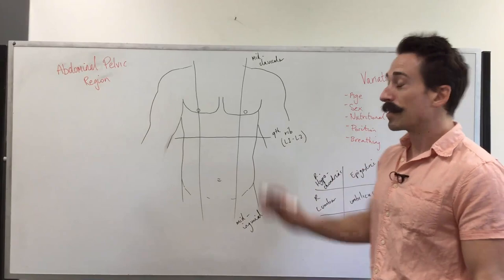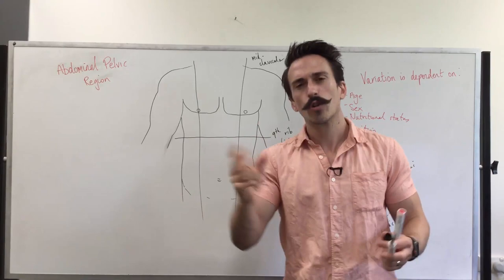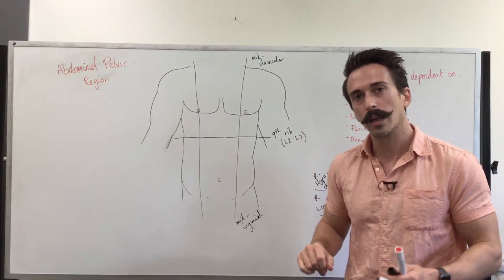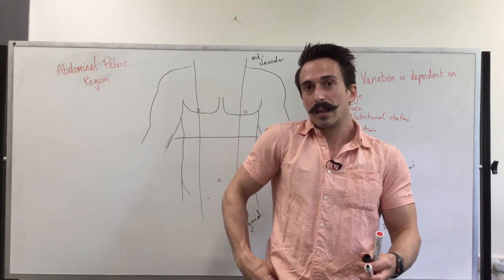Now the next line we're going to draw is what we call trans tubercula. This is going to the iliac tubercle from one side to the other. The iliac tubercle. So you take the iliac,